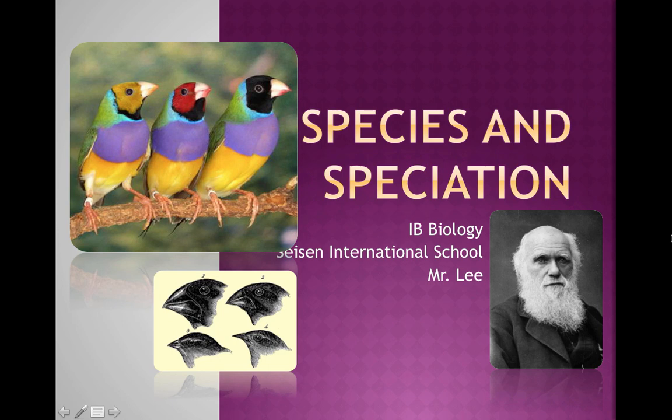Next we're going to take a look at species and speciation — the idea of how new species can arise from other forms. If we look at all the different types of species that exist just for birds, we've got thousands and thousands of different types. Same thing for all other animals, organisms, plants, fungi, and bacteria. And we keep finding and discovering new ones. So let's take a look at how this actually works.